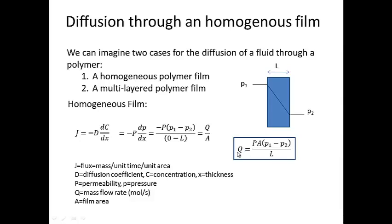So I can solve for the mass flow rate, or the number of moles per second that travels through the polymer membrane, and that's equal to the permeability times the area of the membrane, times the pressure differential across the membrane, divided by the thickness of the membrane itself. A pretty straightforward equation.